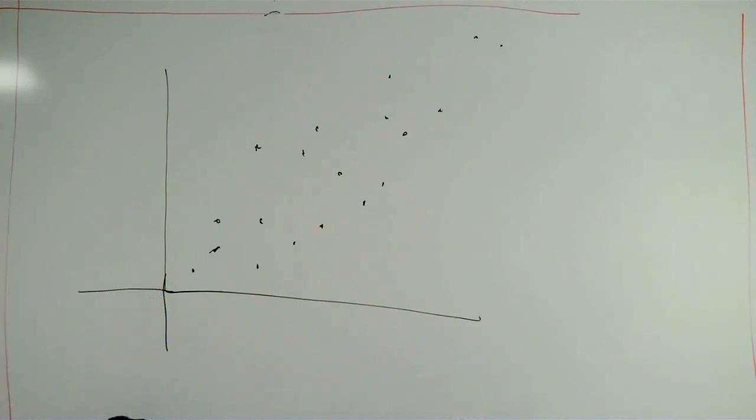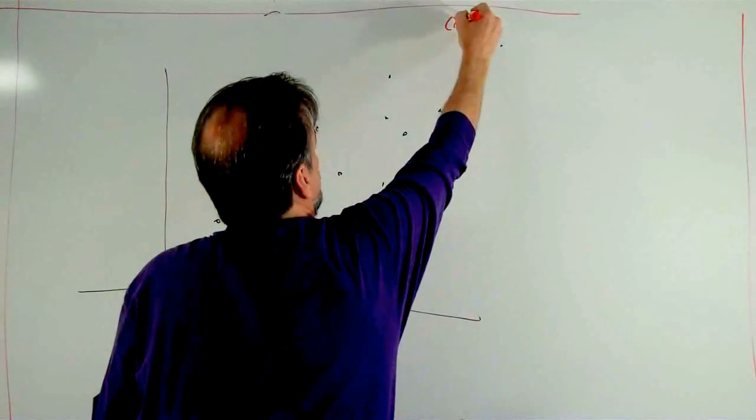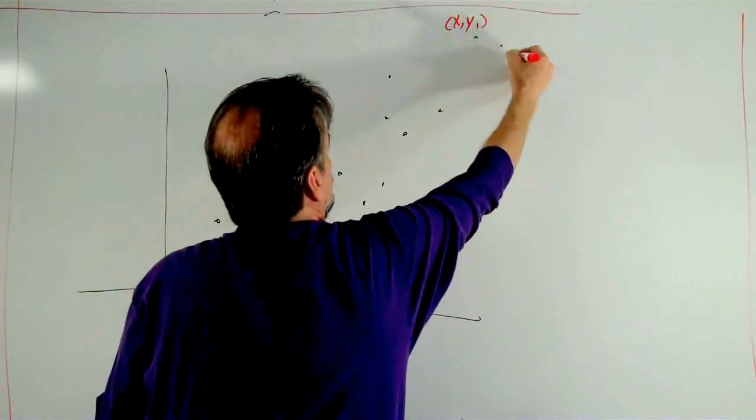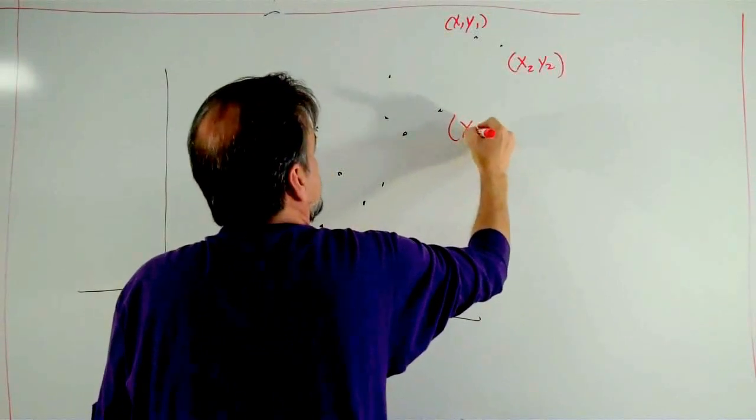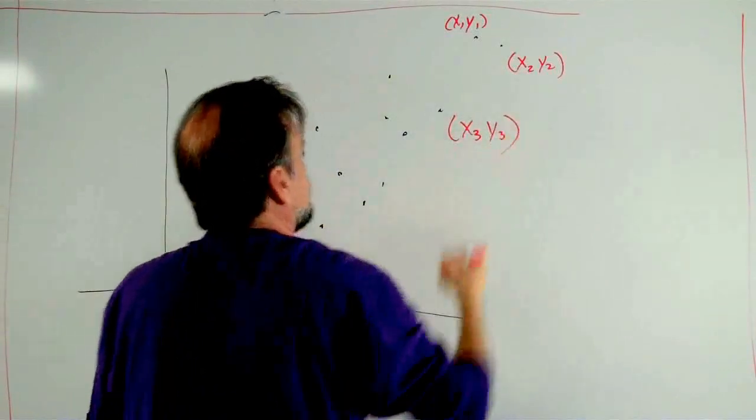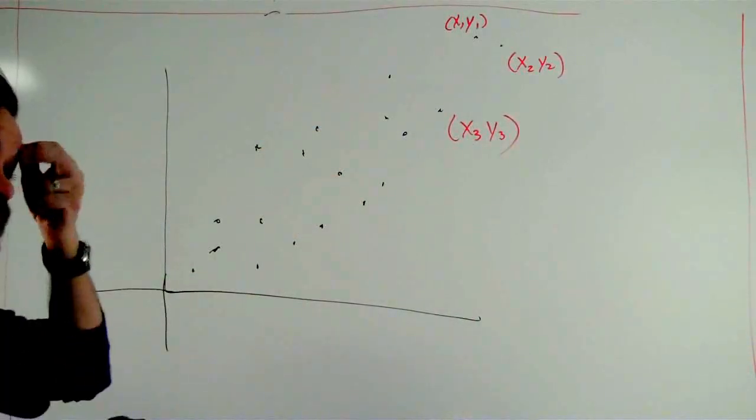Got ourselves the scatterplot. Some x, y data here. Each of these points, we can label as here's, we'll call this x1, y1, we'll call this x2, y2, we'll call this x3, y3, so got a whole bunch of x's and y's here.